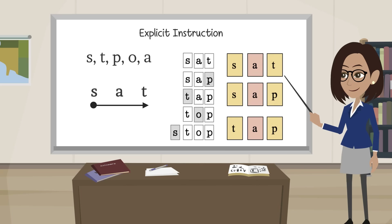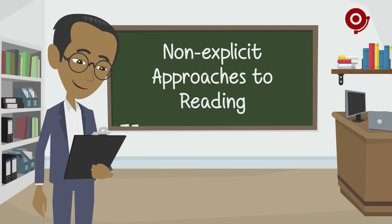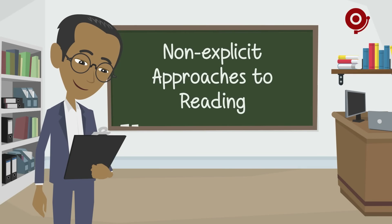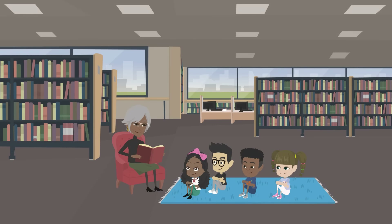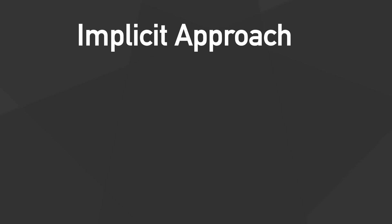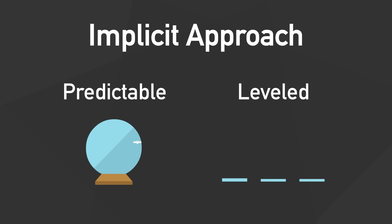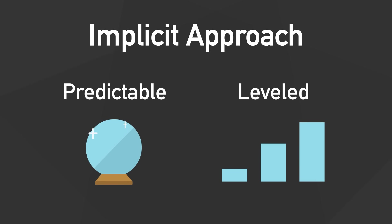Finally, a student would practice applying this skill while reading a book that features these phonics patterns. In contrast, there are approaches to reading that are not explicit. Some approaches are based upon the assumption that through repeated exposure to words, students will either memorize whole words by sight or intuitively pick up on word patterns. Two types of books reflect an implicit approach to reading development: predictable and leveled books.